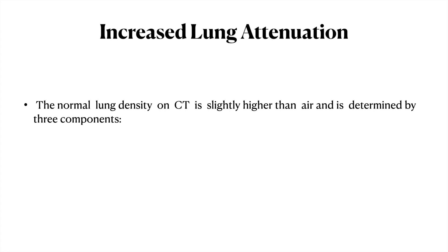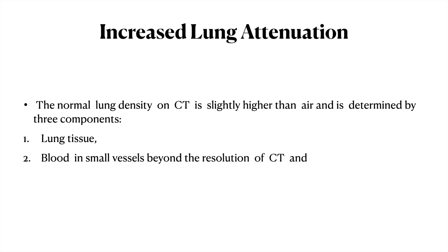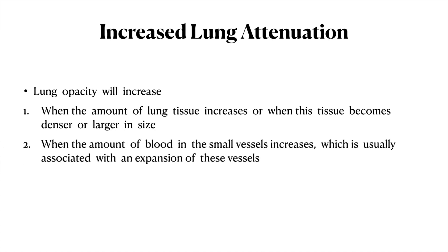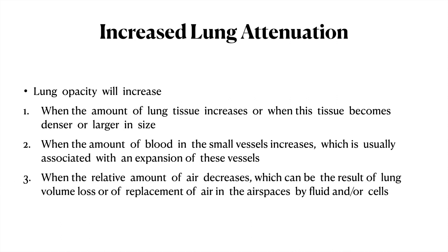The normal lung density on CT scan is slightly higher than air and is determined by three components: lung tissue, blood in small vessels beyond the resolution of the CT scan, and air. Lung opacity will increase when the amount of lung tissue increases or becomes denser, when the amount of blood in small vessels increases due to vessel expansion, or when the relative amount of air decreases due to lung volume loss or replacement of air in the airspace with fluids and/or cells.